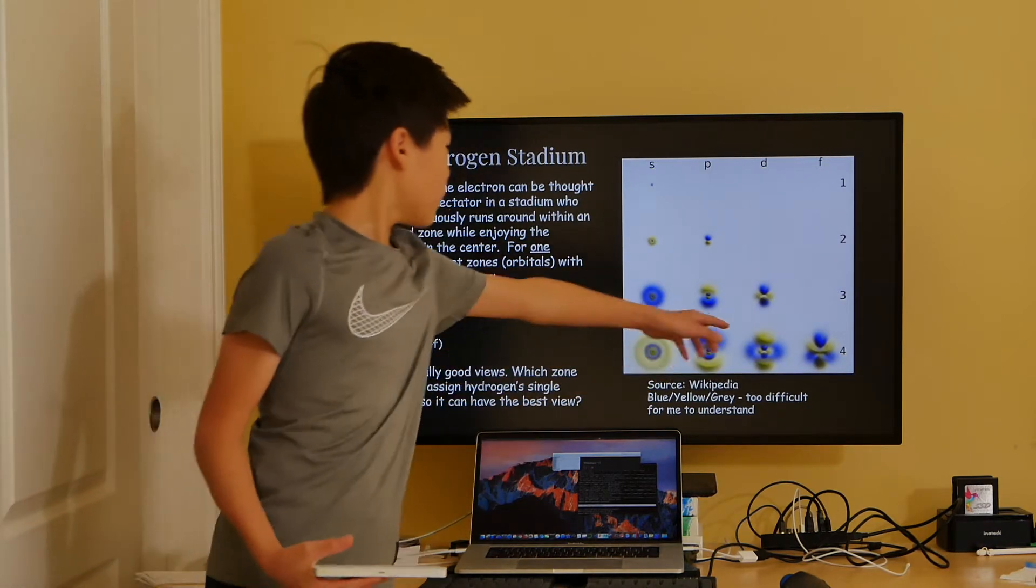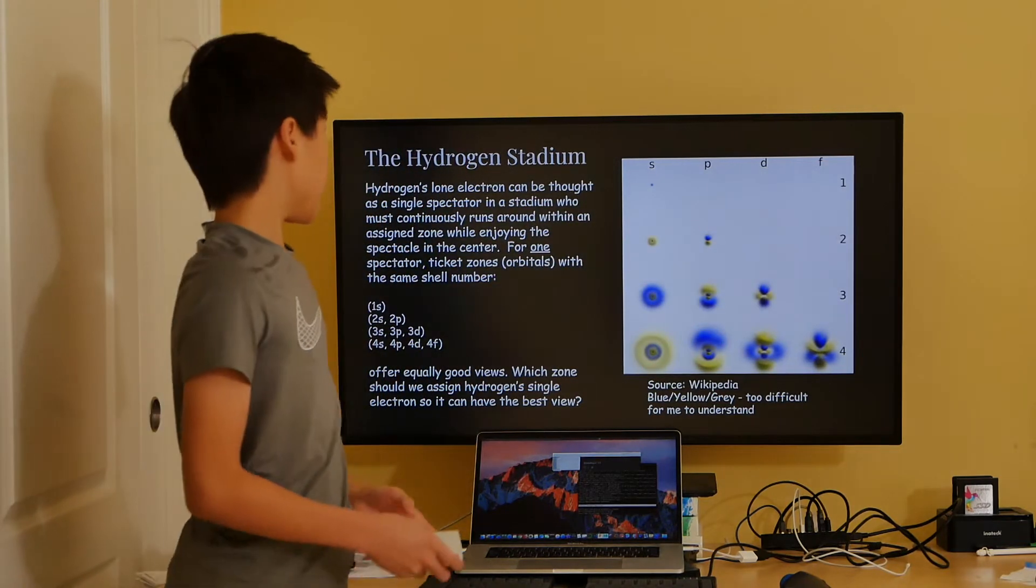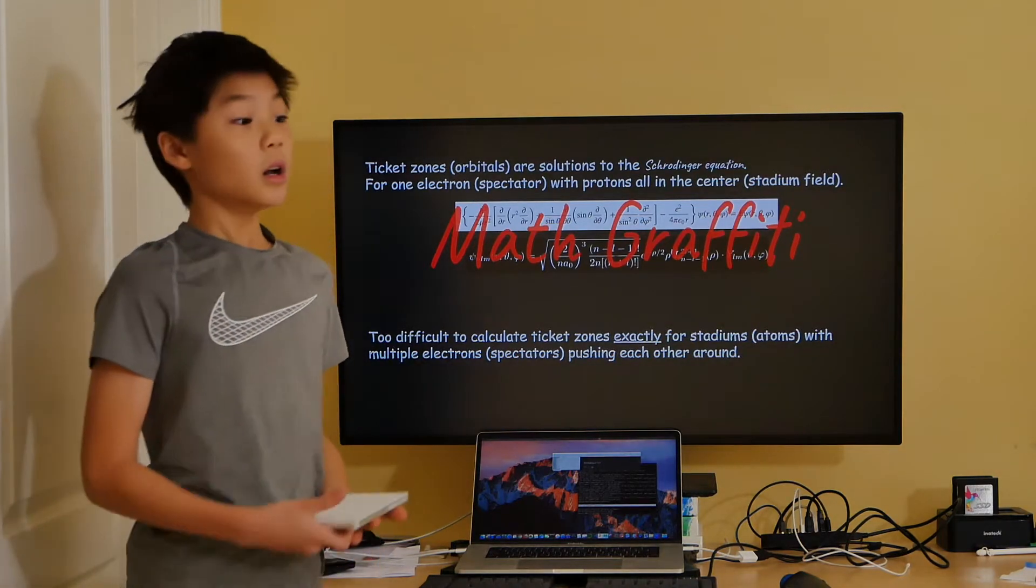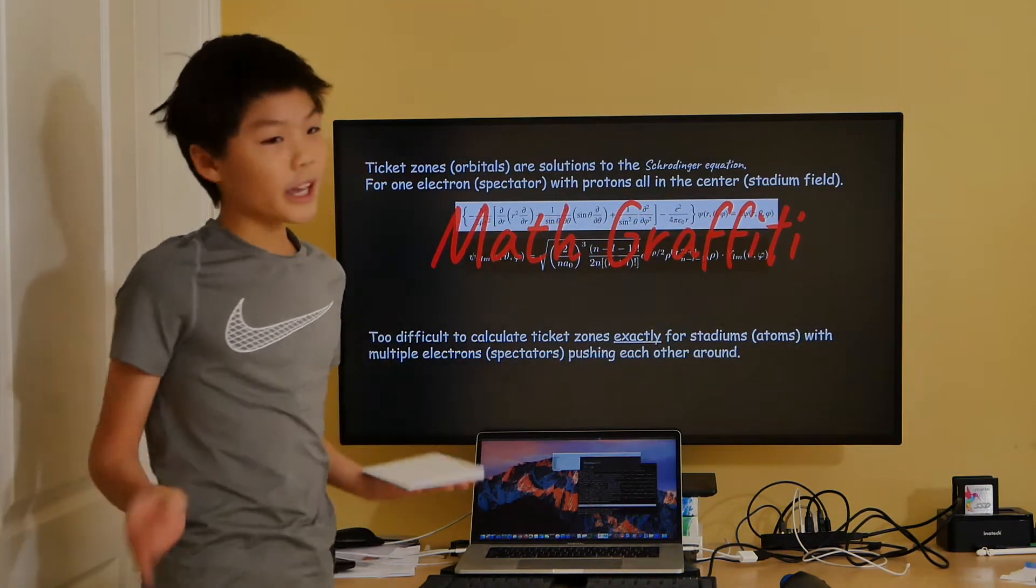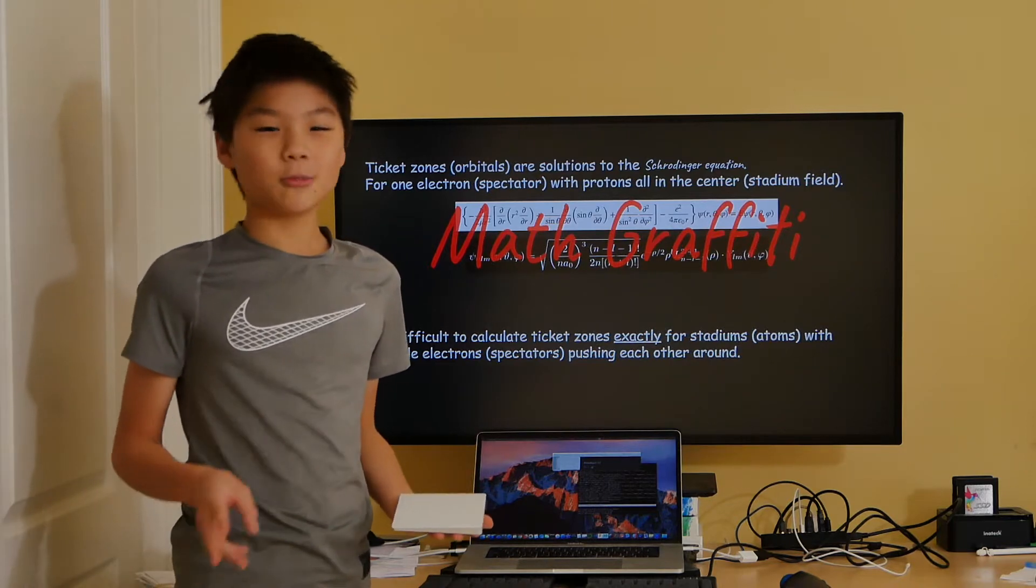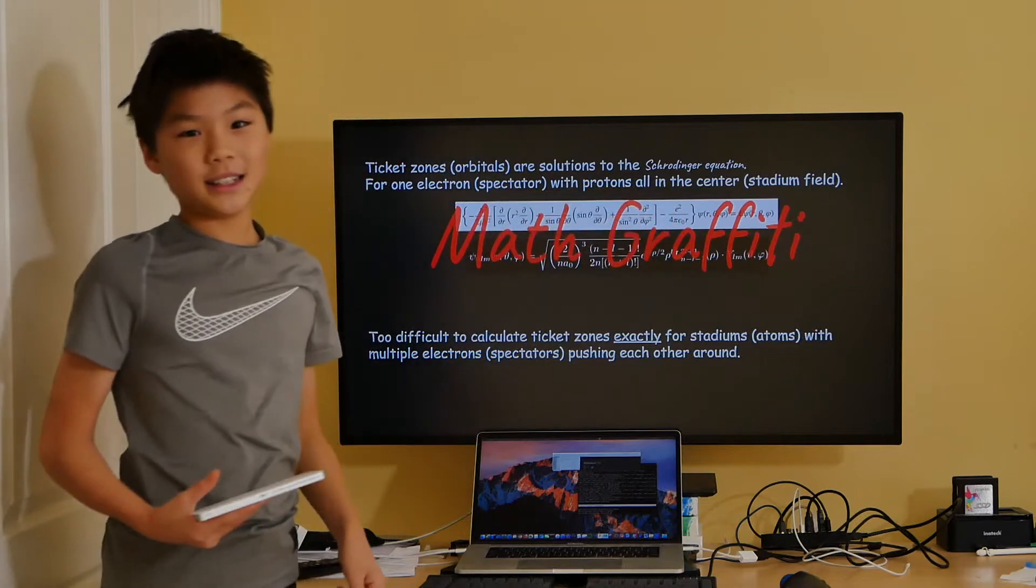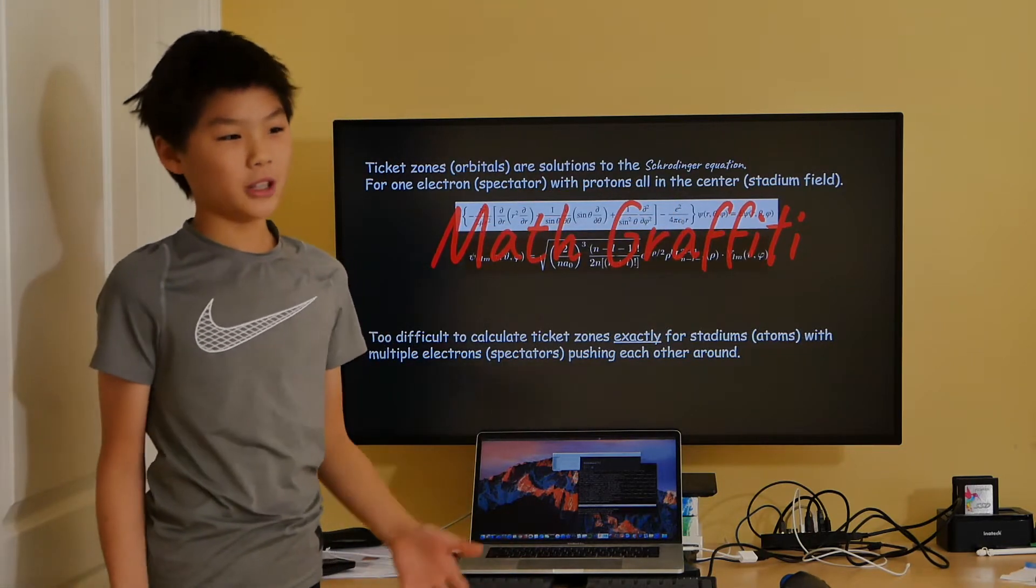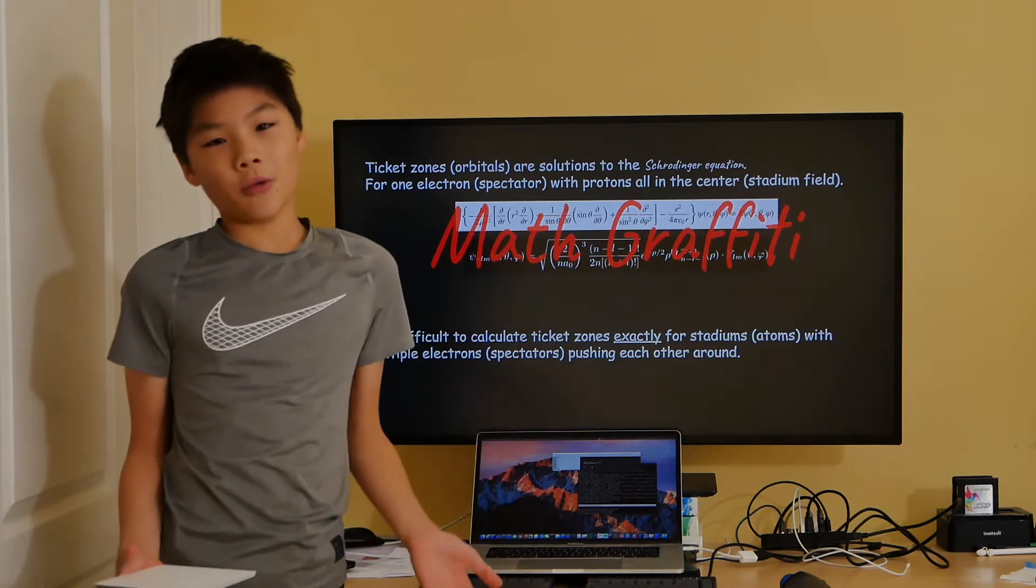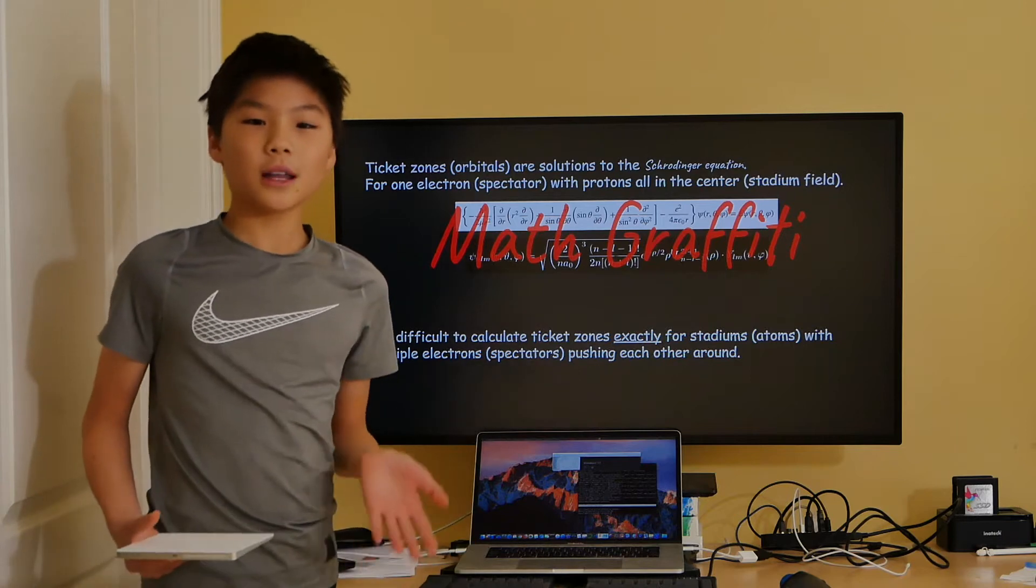Then I asked my dad where all these fancy shapes for the orbitals come from. He explained to me that these shapes are actually solutions to the Schrödinger equation of quantum mechanics. For one electron and a central positive charge, the equation with the white background is the Schrödinger equation, whose solution is below with the dark background. The Schrödinger equation is a difficult one and has not been solved for atoms containing two or more electrons.